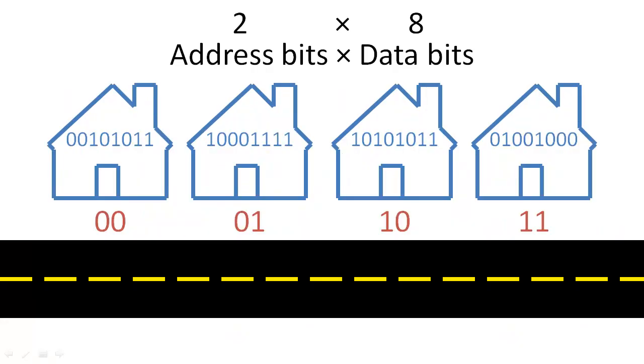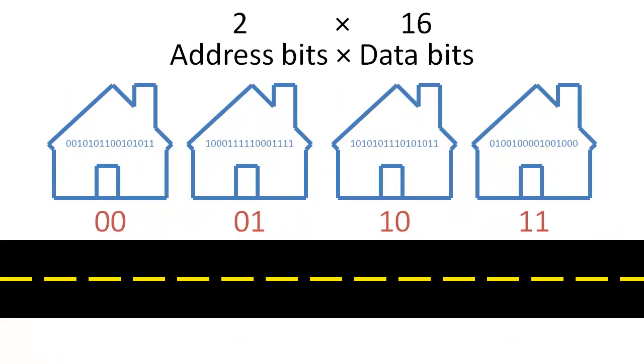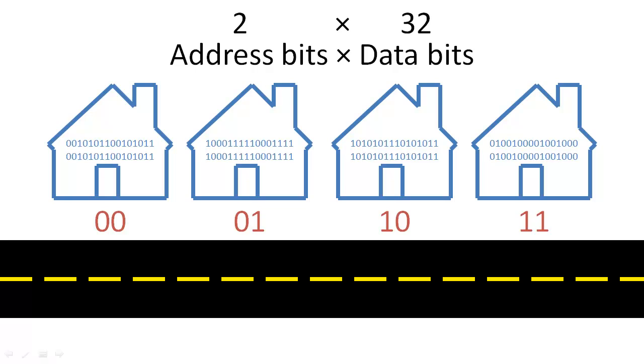If we increase the number of rooms in each house, we will need to add one bit for each room. Notice that adding one data bit does not double the number of rooms that we can describe, because each data bit describes the data. Address bits encode information about the location, but data bits are the information.